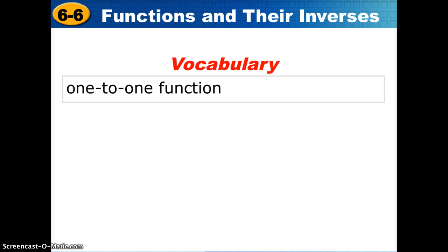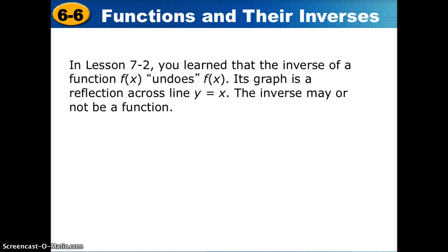Our new vocabulary is one-to-one function, and that's just what it sounds like: one x has exactly one y and every y has exactly one x. We learned previously that an inverse function undoes the operations in the original function. The graph of the inverse is a reflection across the line y equals x of the original function. And the inverse of a relation or a function may or may not be a function.